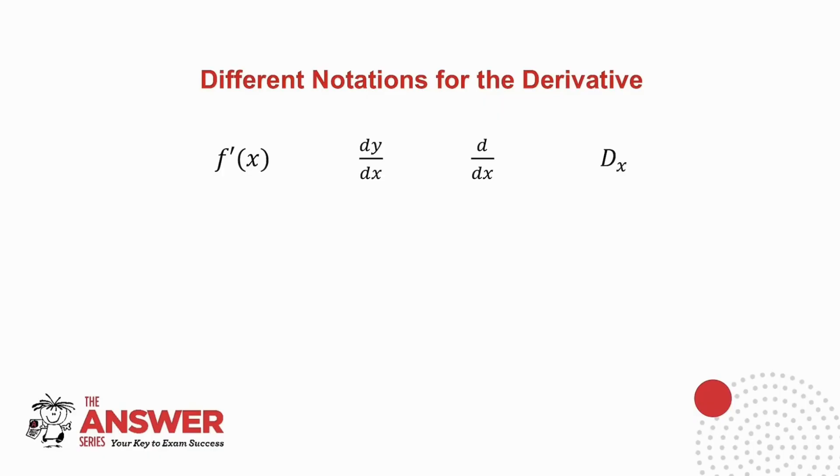All four of these different notations mean exactly the same thing. They mean find the derivative, in other words, find the gradient. And what we will do in the next example is we'll have a look at all four of these different notations.